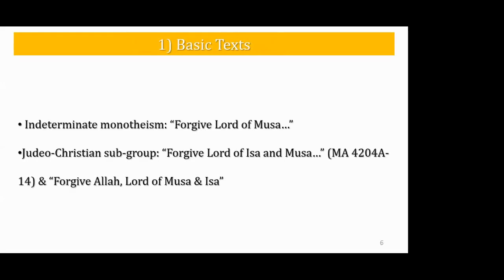Lord of Musa, Lord of Isa — these may be the classic archaic believers. They were believing in Musa and Isa, but Muhammad didn't exist yet. It's a very generic group of believers — monotheistic, following Old Testament ideas and also some Christian ideas. It's a mixture.